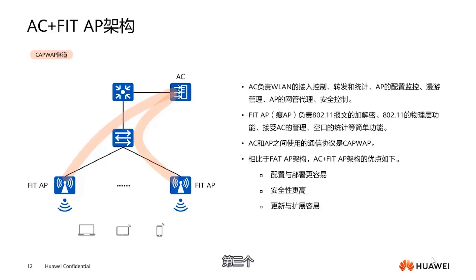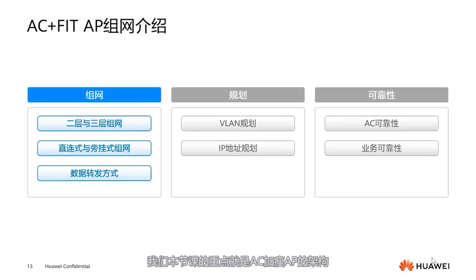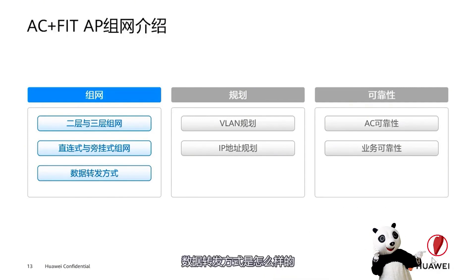Thirdly, regarding updates and scalability: during upgrades, just input a command on the AC, and all APs will be upgraded together. Expansion is the same, allowing for group expansion. The focus of this session is on AC-plus thin AP architecture, divided into three parts: network topology including layer 2 and layer 3 networking, direct attached and bypass networking, and how data forwarding works.